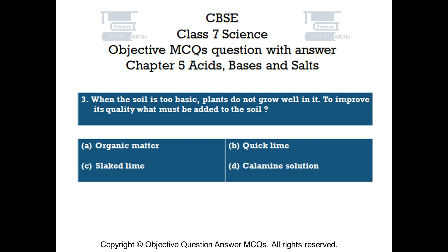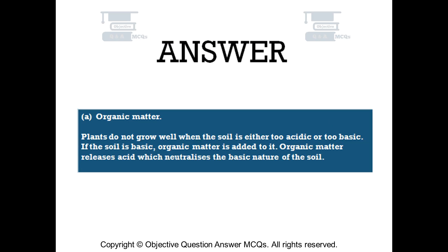The right answer is Option A: organic matter. Plants do not grow well when the soil is either too acidic or too basic. If the soil is basic, organic matter is added to it. Organic matter releases acid which neutralizes the basic nature of the soil.